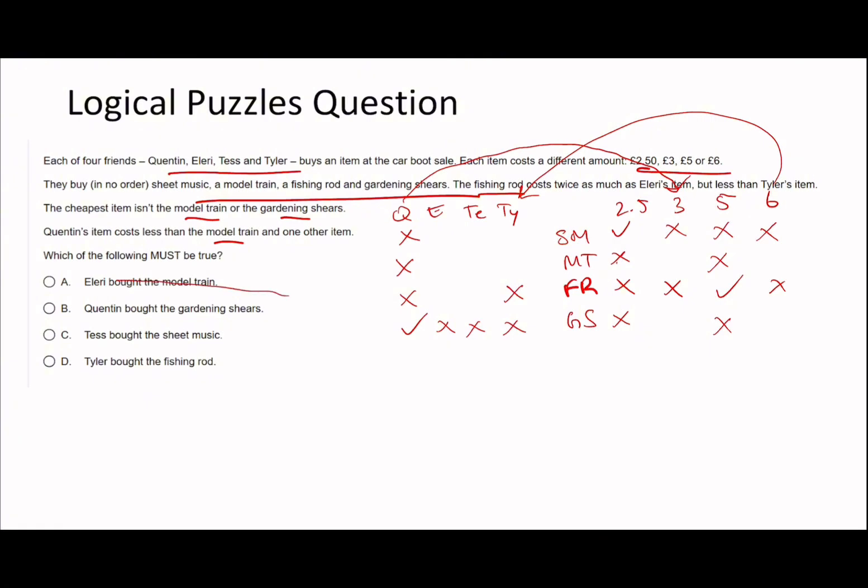As you can see, we've actually got our answer even before we have to complete everything. This is one of the key ideas - often you don't necessarily need to complete the entirety of the logical puzzle to get to the answer. Quentin bought the gardening shoes because Quentin is the person who spends £3, and we know the sheet music is not £3 and the fishing rod is not £3 either.